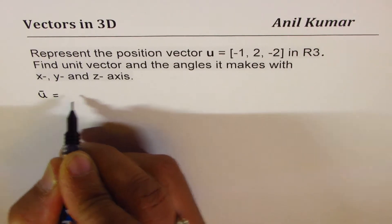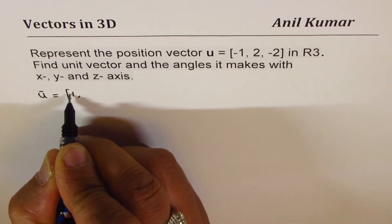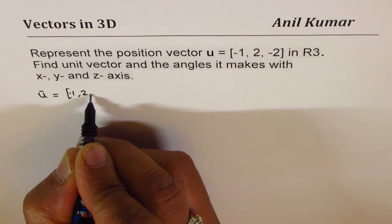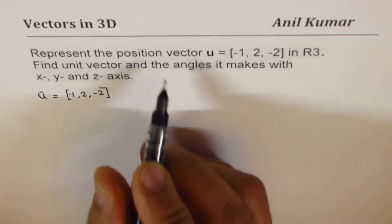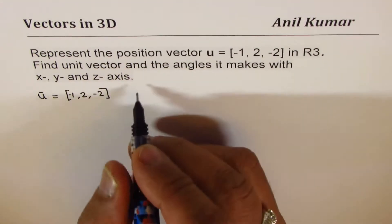So, we give the vector u, which is -1, 2, -2, and we have to represent this as position vector.